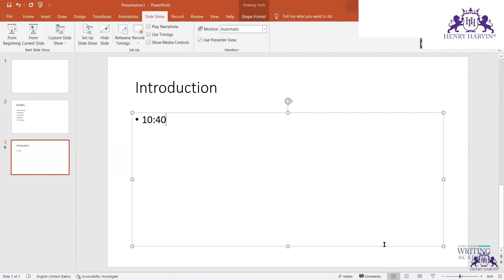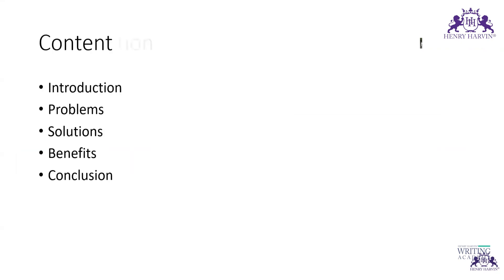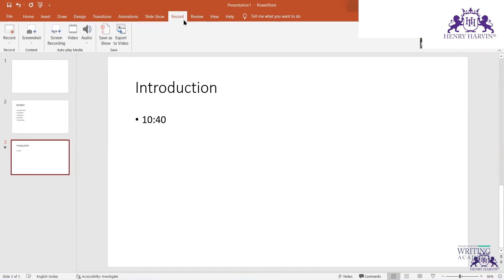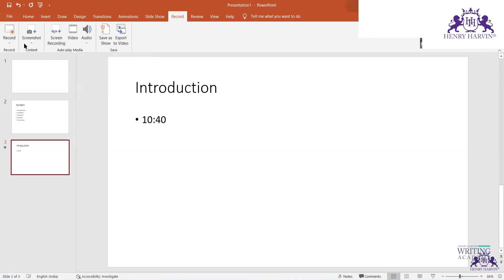The Slideshow tab lets you run the presentation. The shortcut key to run a PPT from the beginning is F5. If you want to run from a particular slide, use Shift+F5. The Record option also lets you do a screen recording and record your audio to add to the presentation.